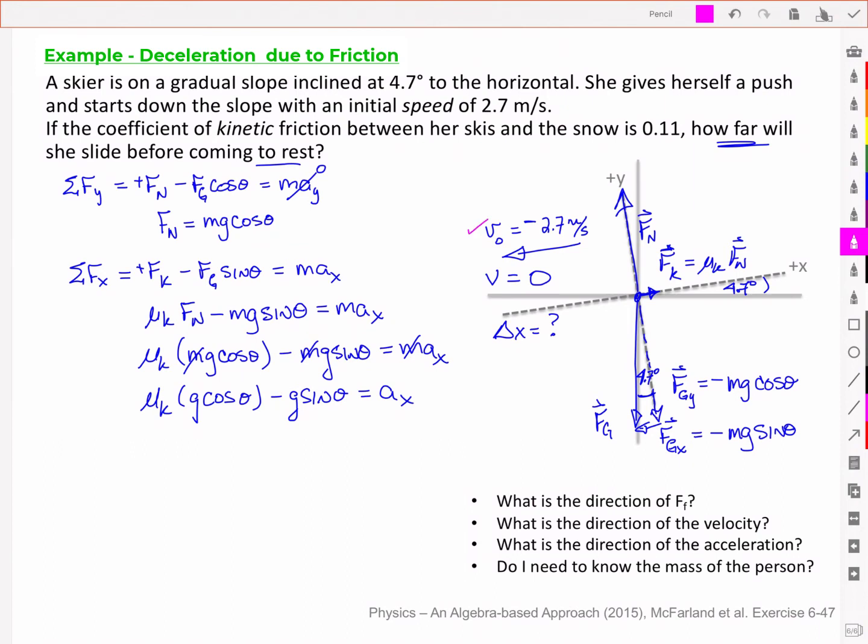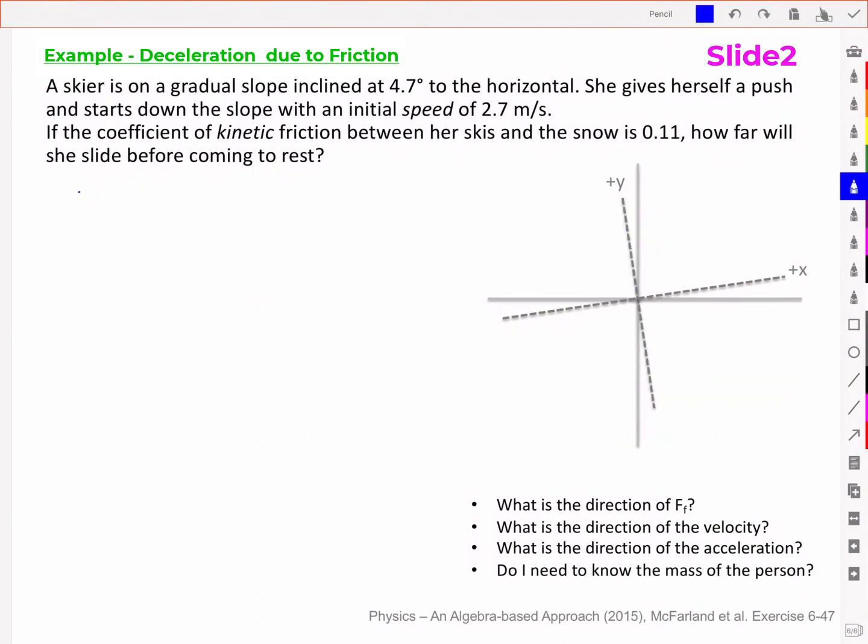So we've got v-naught, we've got v, we've got a delta x, and we've got an expression for an acceleration, where we have coefficient of friction, acceleration due to gravity, and our theta. And so that suggests this kinematic equation that relates my acceleration, my velocities, and my displacement.